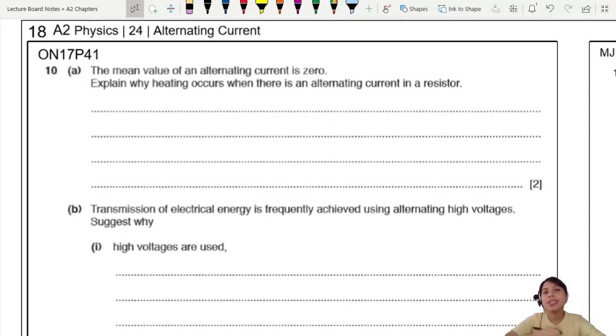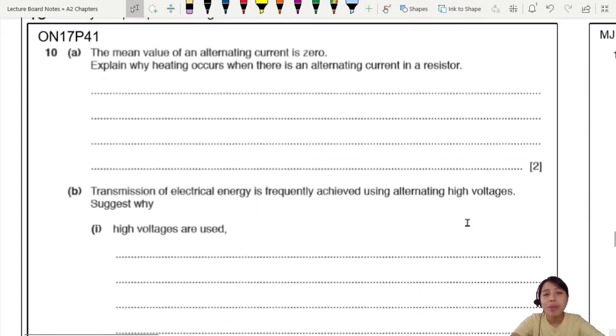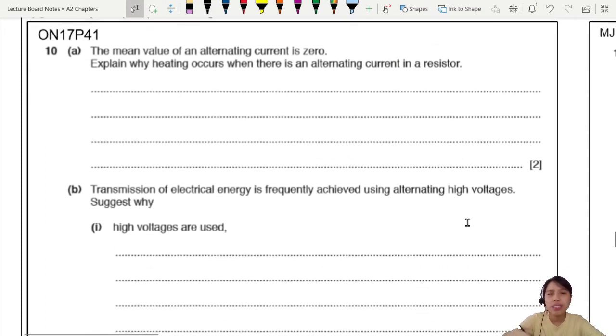Let's start off with a short and sweet alternating current explanation question. ON17, P41, Q10. The mean value of an alternating current is zero. What do they mean by mean value is zero? Well, you know the current graph, right? It's going up and down. So what's the average value? Zero, because you take the average of this, it's the middle. So we say, oh, maybe the mean is zero.